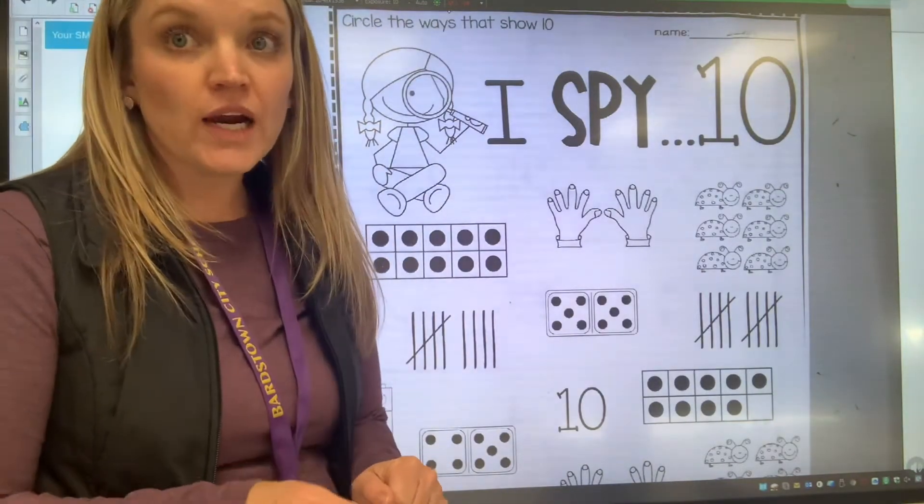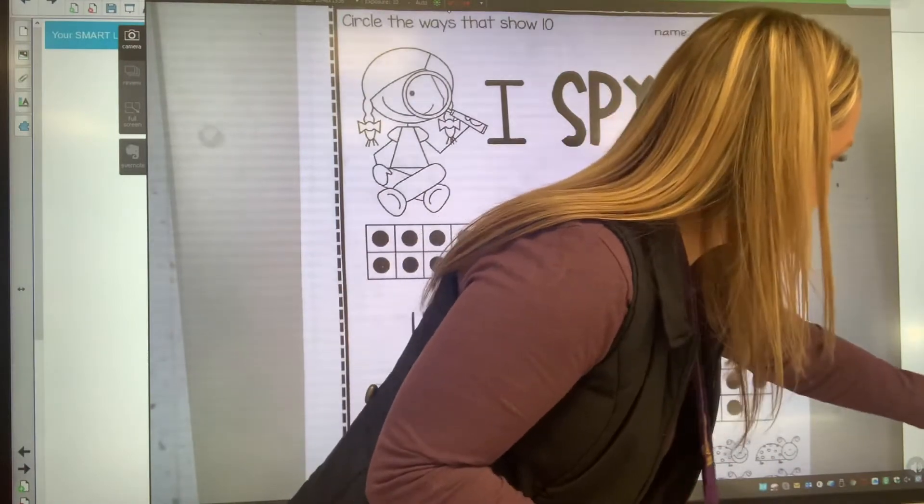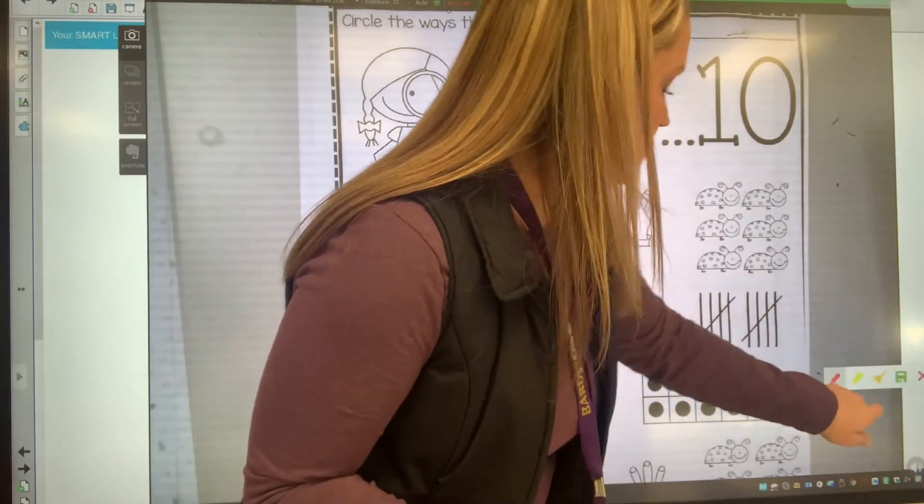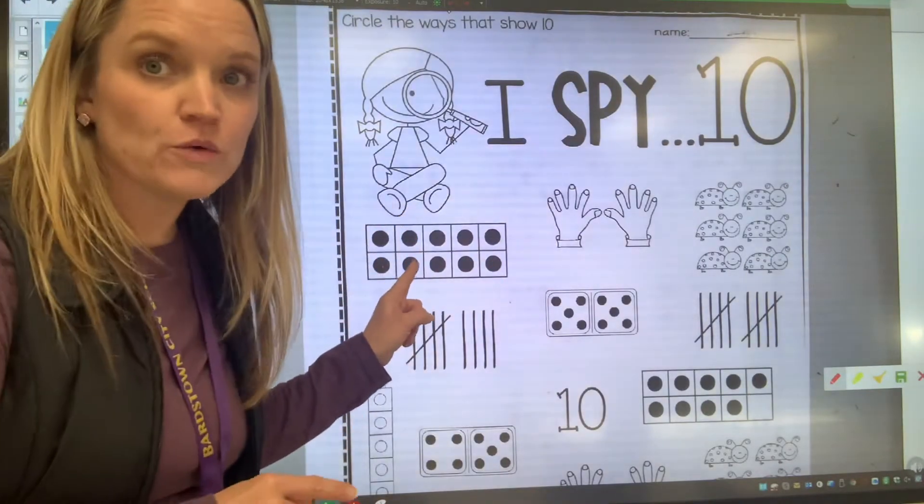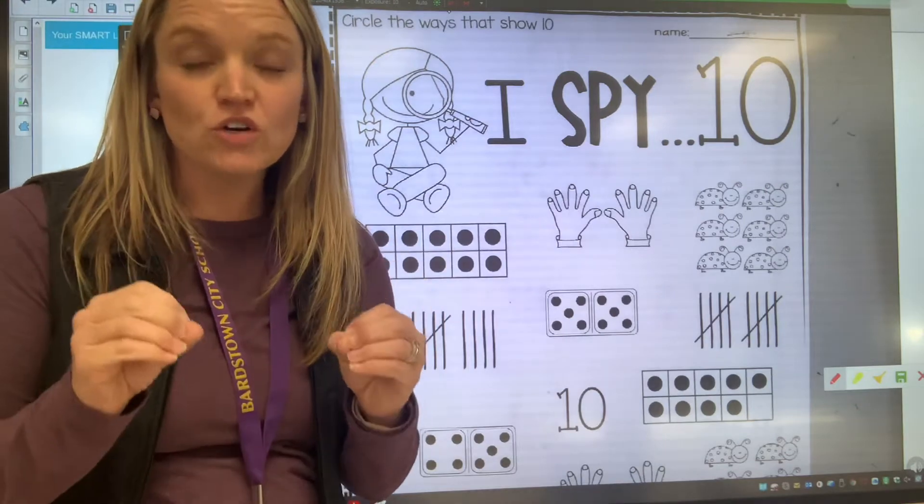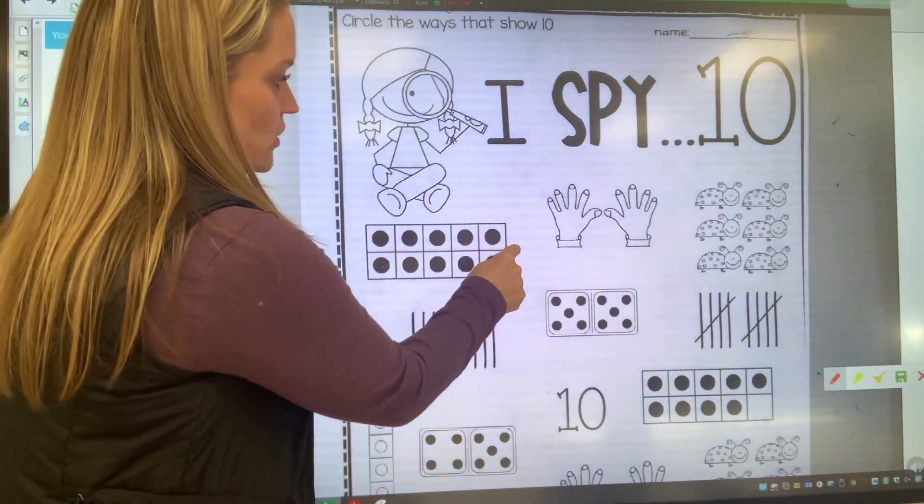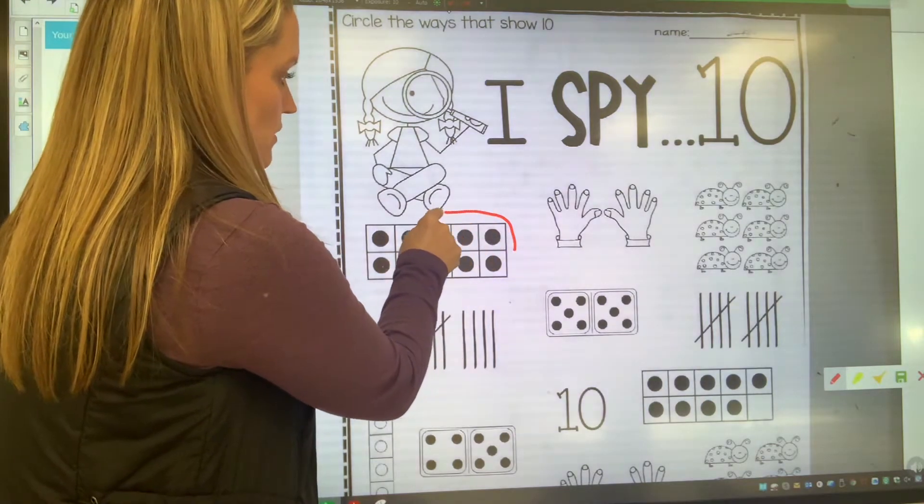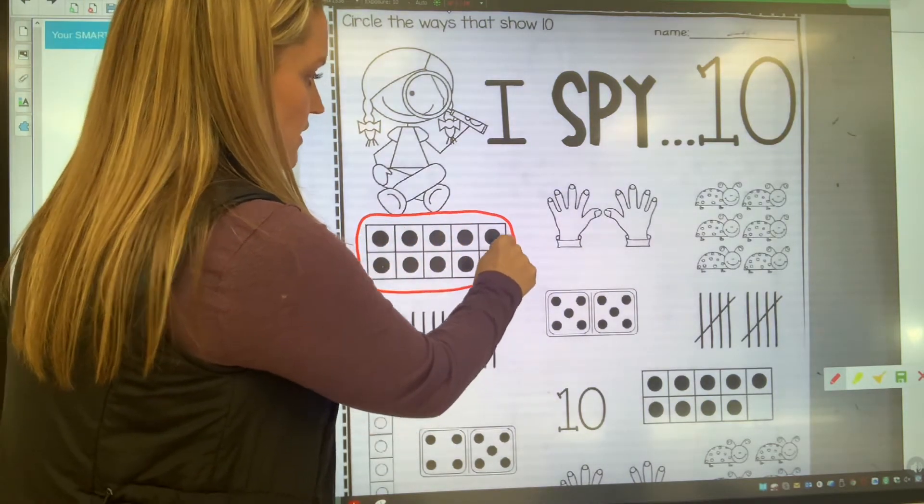So for your items I want to remind you that when you are circling like we see this 10 frame and it's all the way full. When a 10 frame is all the way full of circles we know that that shows 10. We want to circle it and we're taking our pencil and circling all the way around the outside of the item.